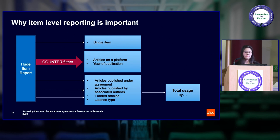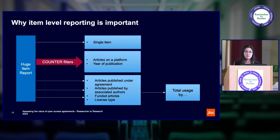One of the main challenges with item reports is that they are huge and very unwieldy. In practice, no one is going to want to look at a giant spreadsheet with lots of items — the vast majority of the time we're really interested in aggregated usage. We're looking at taking a subset of the items and then looking at the total. The Counter reports do allow you to do this — you can take out subsets by articles on a platform, all articles in a journal, or slice by year of publication. However, it's actually more likely that we want to look at all articles published under a particular agreement, associated with particular authors, or under a particular funder grant — then aggregate that up into total usage from a consortium perspective.